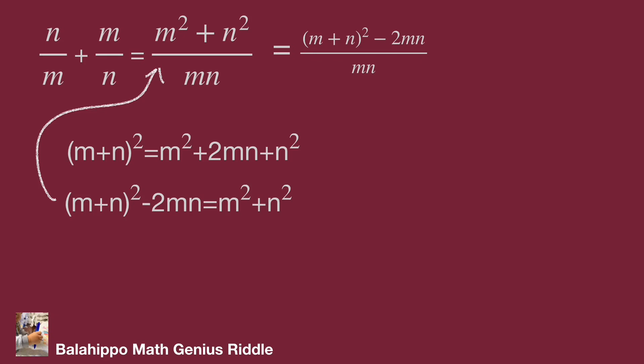Also, we get quantity m plus n squared equal to mn in the given information. Substitute quantity m plus n squared by mn. So the equation becomes mn minus 2mn over mn. Simplify the equation. The value becomes negative 1.